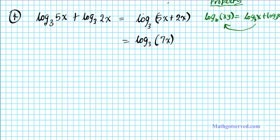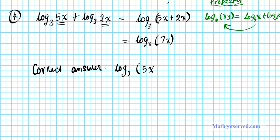Going backwards with the product property: the sum of two logs with the same base equals the log of the product of their arguments. So the correct answer is log base 3 of 5x times 2x, which simplifies to log base 3 of 10x squared. The mistake was adding the arguments instead of multiplying them.